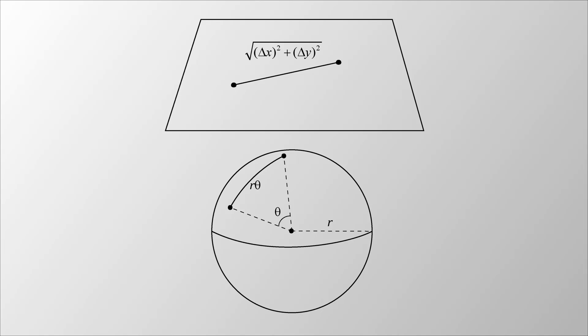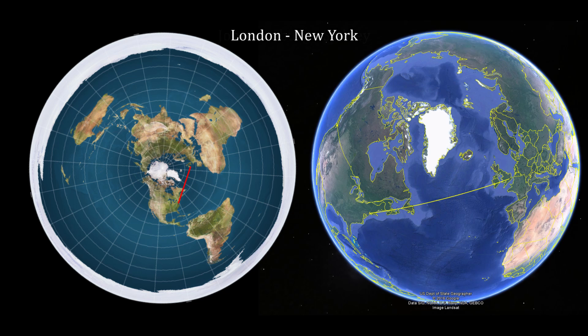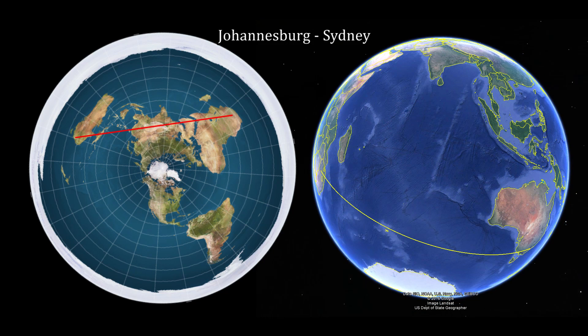The shortest path between two points on a plane is a straight line. The shortest path between two points on the surface of a sphere is a great circle arc. On the flat earth, as long as we're close to the North Pole, straight lines will match great circle arcs pretty well. But as you go south, well... you're screwed.